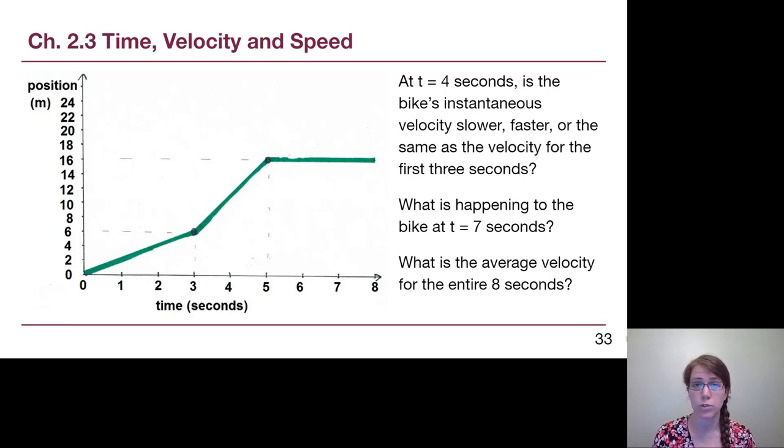So here's three questions that I want you to ask and answer in your notes. Pause the video for as long as you need to answer these three questions. Commit to an answer before you keep watching. First question: At t equals four seconds, is the bike's instantaneous velocity slower, faster, or the same as the velocity for the first three seconds? To answer that, we are basically asking is that slope shallower, steeper, or the same slope? At four seconds, that portion has a steeper slope, which means that it is moving faster. That first question, the answer would be faster.